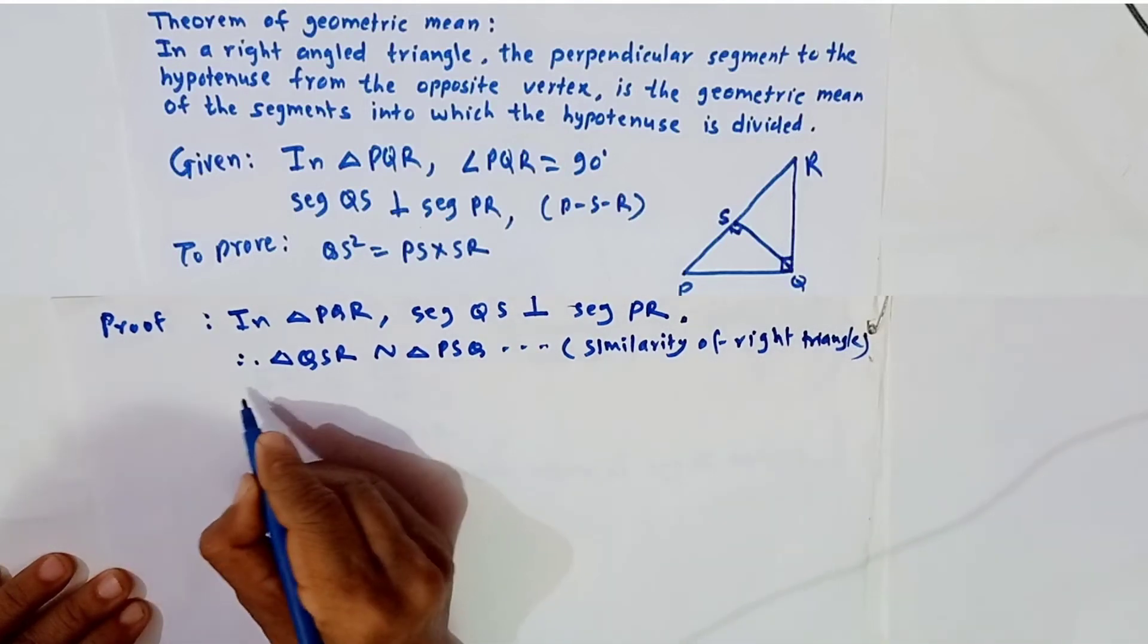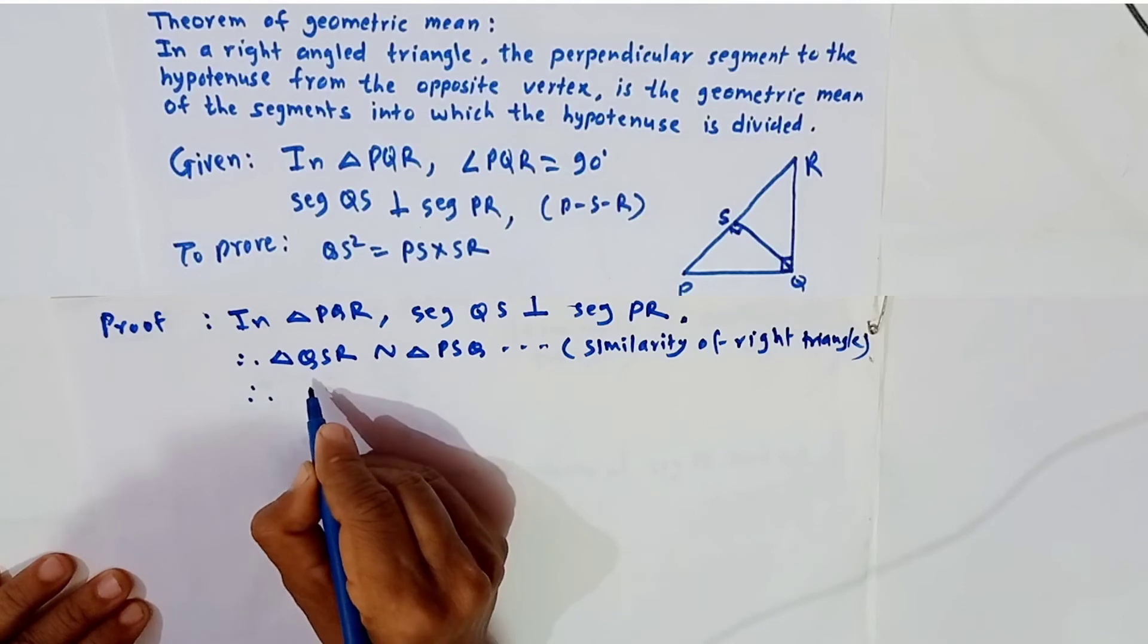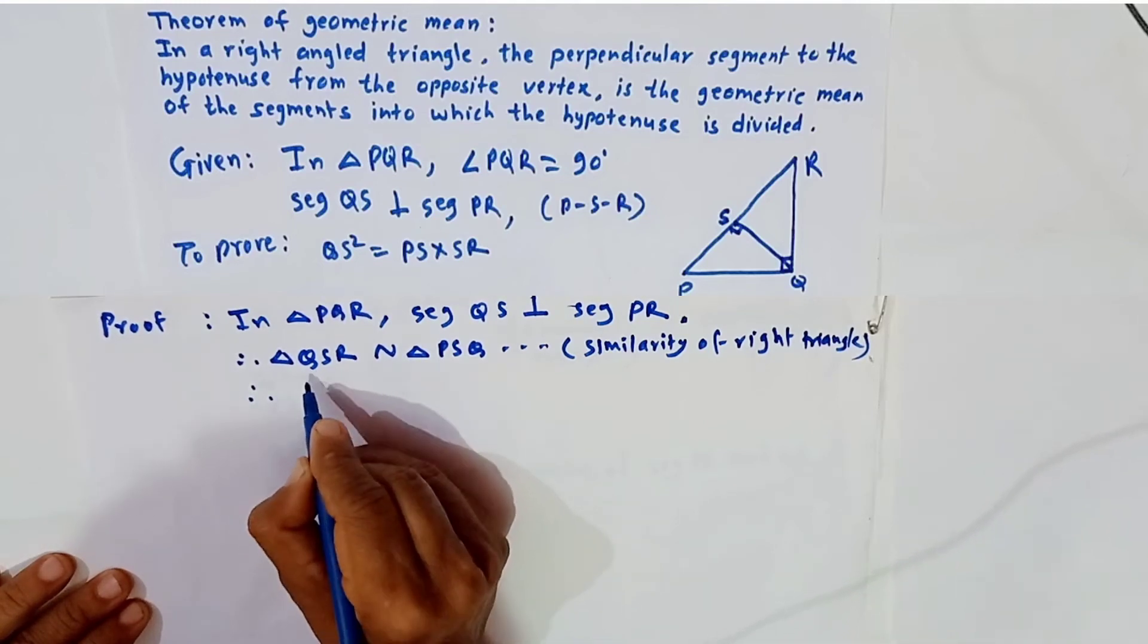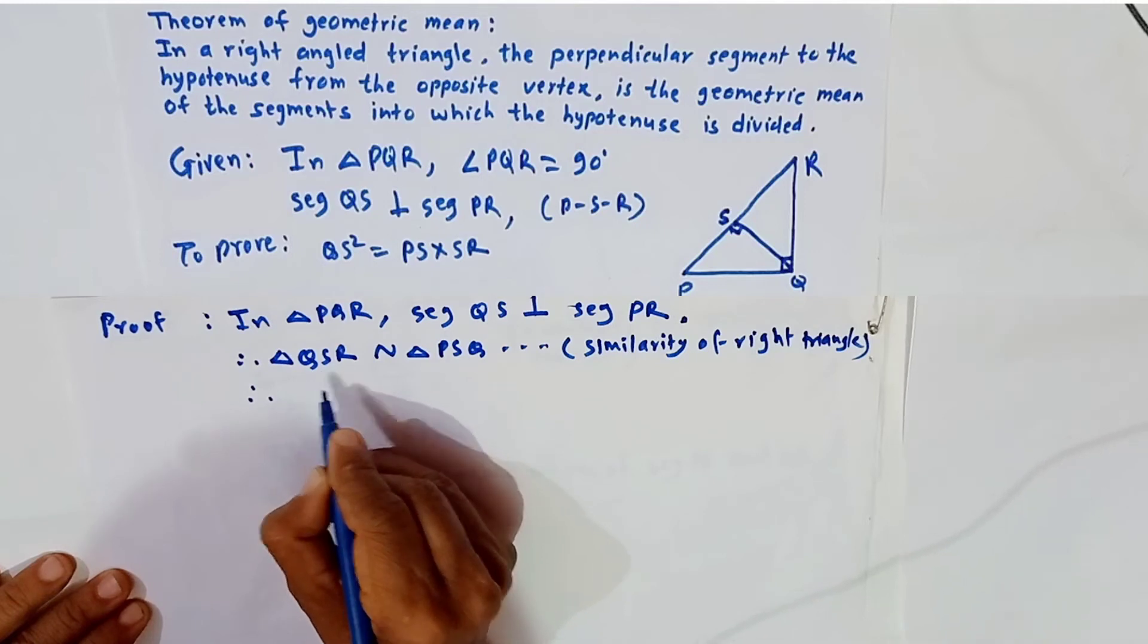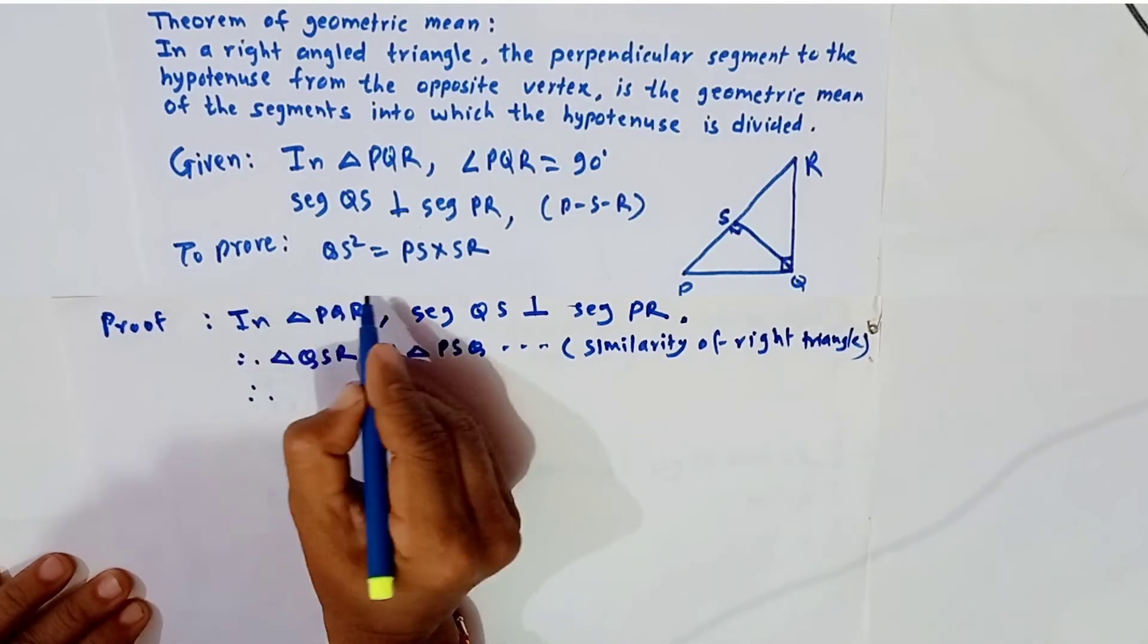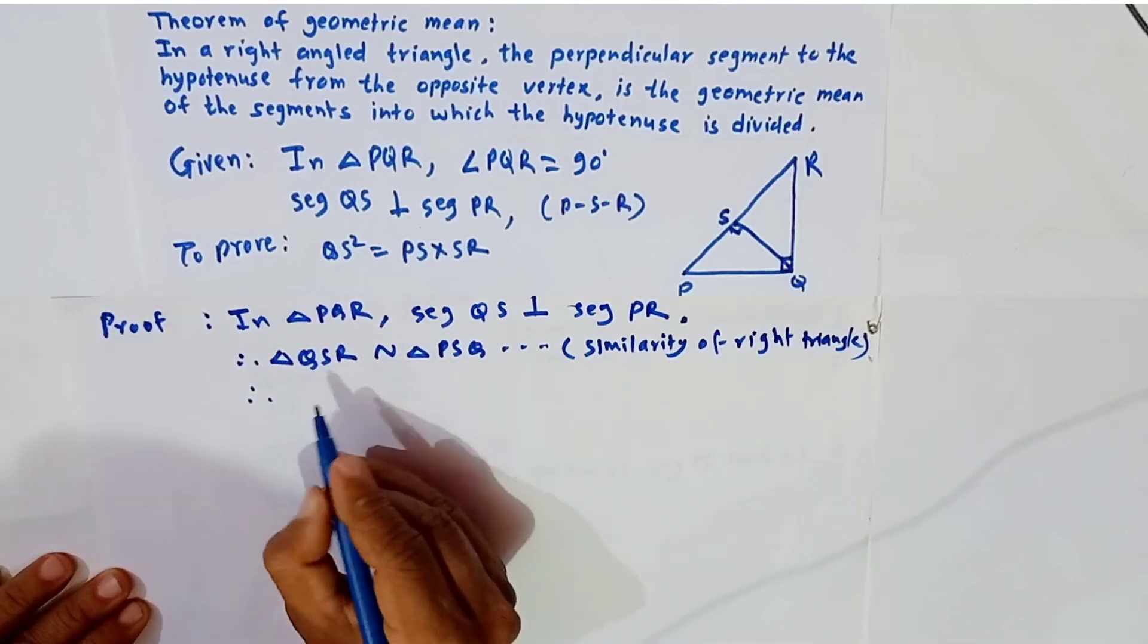Now these two triangles are similar, so their corresponding parts are equal and corresponding sides will be in proportion. Therefore we take their corresponding sides.